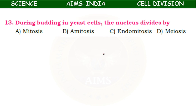During budding in yeast cells, the nucleus divides by — here also there is no spindle formation, so it divides by amitosis. Yeast, bacteria, protozoans, and unicellular organisms like amoeba and paramecium — amitosis is the common type of cell division or reproduction in these organisms.